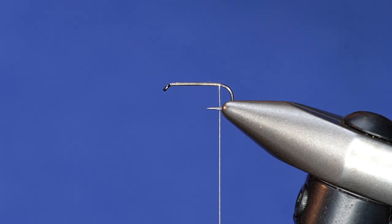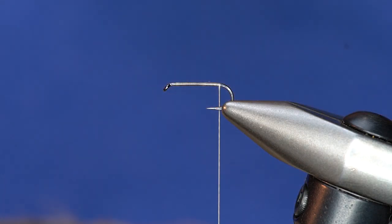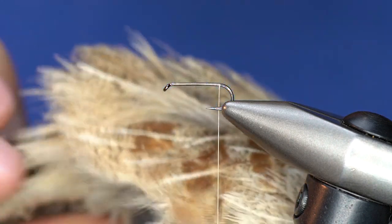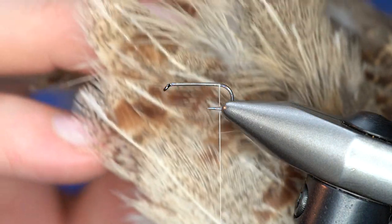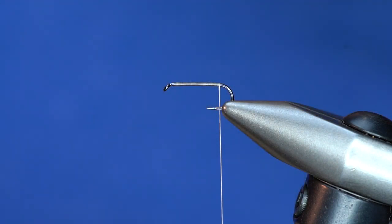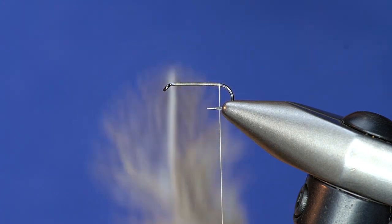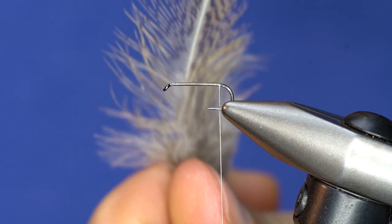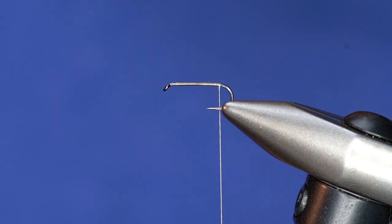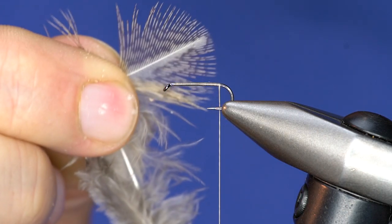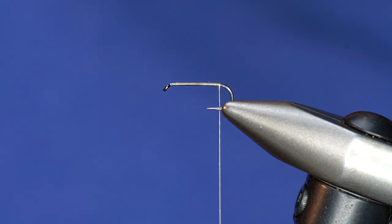So what I like for a lot of Calabatus patterns is partridge. For this one I actually ended up using a different material for the soft hackle, we'll get to that in a minute. But for the tail I still like partridge. So what I like is in the shoulder area there's some feathers that have a little bit more distinct barring on them. And if you look at the Calabatus nymphs, they're typically a lighter colored tail.